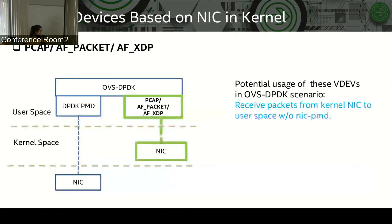The second category of virtual devices includes PCAP, FPacket, and FSDP. Originally, OVS DPDK receives packets from NIC with poll-mode driver to user space. PCAP, FPacket, and FSDP can be used as VDEV ports in OVS DPDK and receive packets from kernel NIC to user space without poll-mode driver.